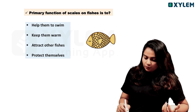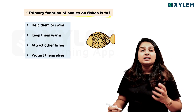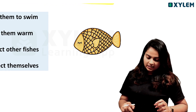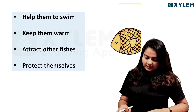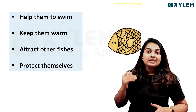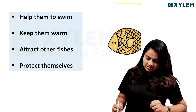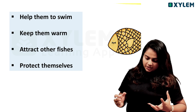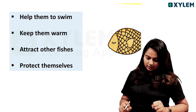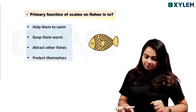Next question: What is the primary function of scales in fish? The options are: help them to swim, keep them warm, attract other fish, and protect themselves.